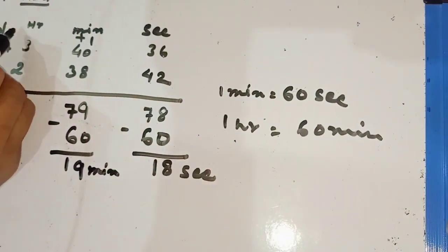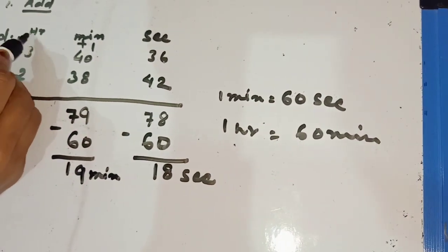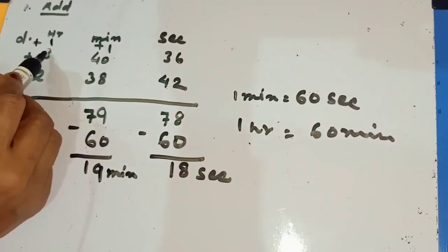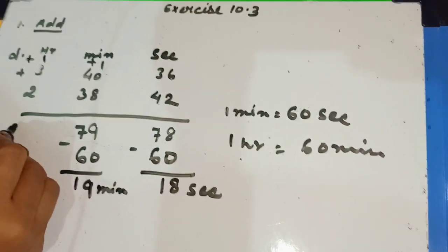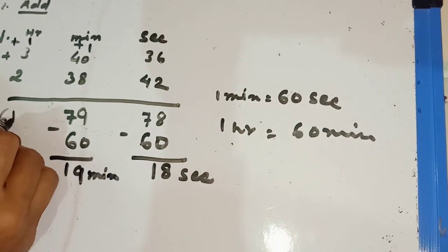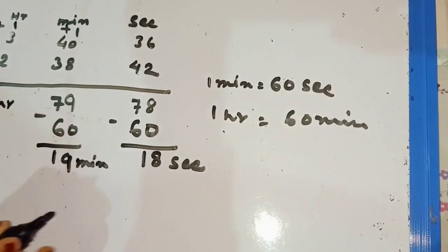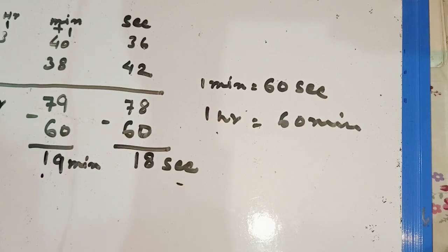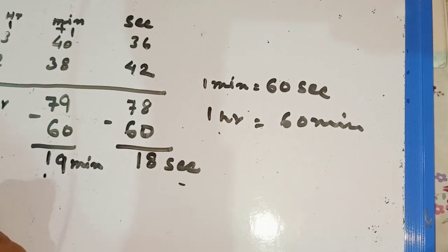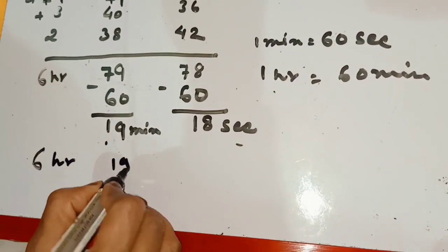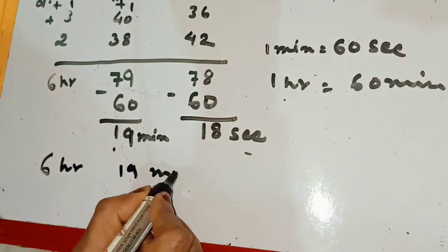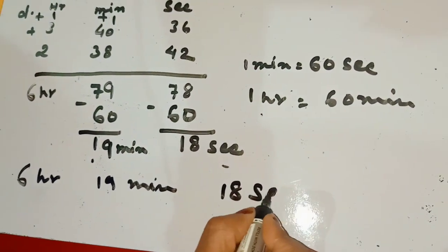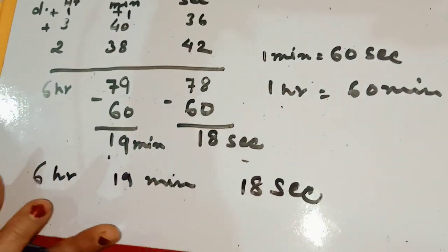1 hour is added here. So 3 and 2 is 5 and 1 is 6. The final answer is 6 hours, 19 minutes and 18 seconds. That is the answer of this question.